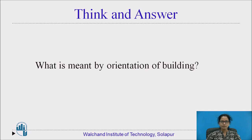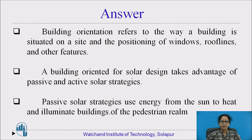You can pause the video for two minutes and give the answer for this: What is meant by the orientation of the building? The answer is: building orientation, in general, refers to the way a building is situated on a site and the positioning of the windows, roof lines, and other features. A building oriented for solar design takes advantage of passive and active solar strategies. Passive solar strategies use energy from the sun to heat and illuminate the buildings.